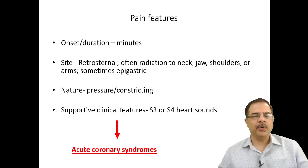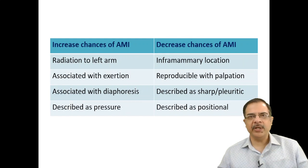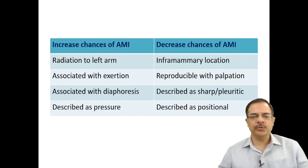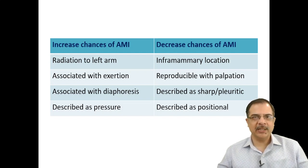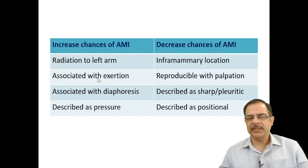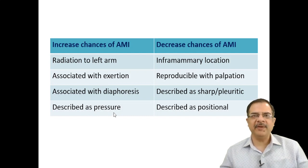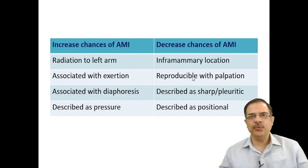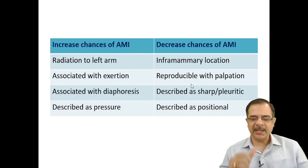These are the classical points in favor of acute coronary syndromes like unstable angina or myocardial infarction — a very important medical emergency. Points that favor acute MI include radiation to the left arm, associated diaphoresis, pain that increases on exertion, and a pressure-type description.